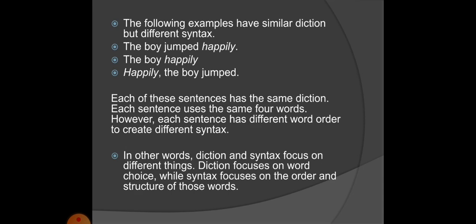Each of these sentences has the same syntax — each follows the structure of subject, verb, and adverb — however, each sentence uses different diction, meaning different choice of words. Conversely, similar diction but different syntax: 'The boy jumped happily,' 'The boy happily jumped,' and 'Happily, the boy jumped' — the choice of words is the same but the arrangement of the sentence is different.